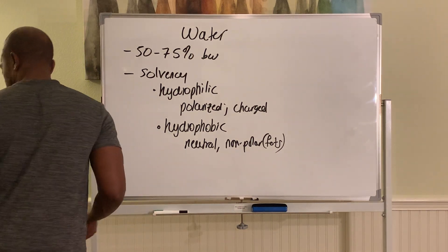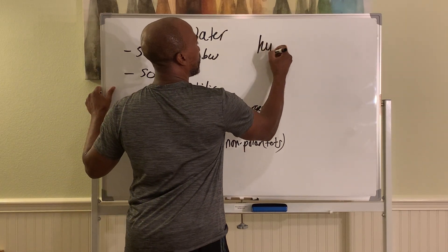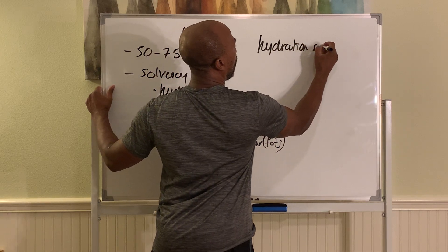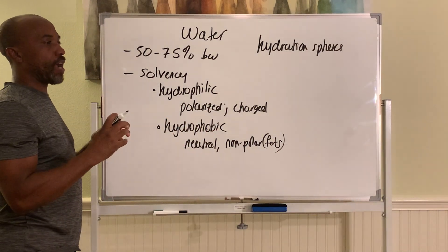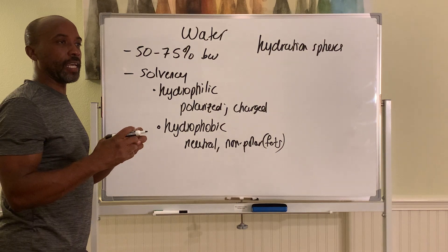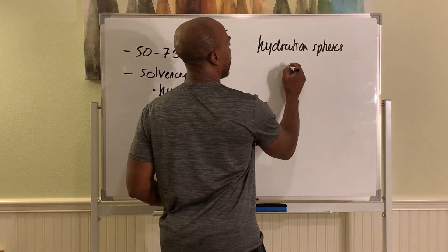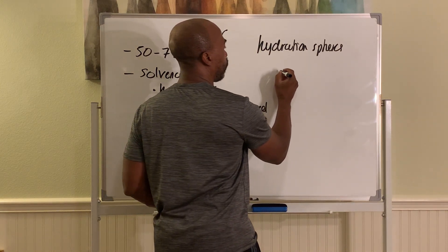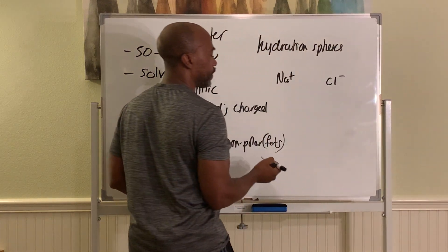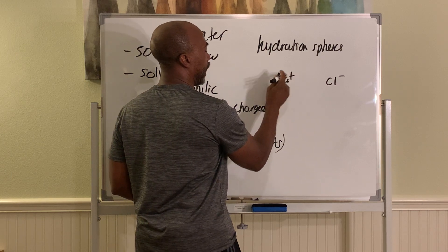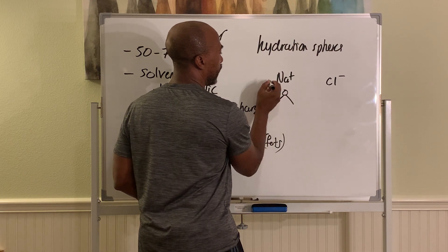When water dissolves things, it does so by forming what's called hydration spheres. Hydration spheres are spheres of water molecules that surround and isolate ions so that they cannot re-join each other. For example, if you have NaCl in water, NaCl will separate into Na+ and Cl−, and then around Na+, the water will orient itself accordingly.